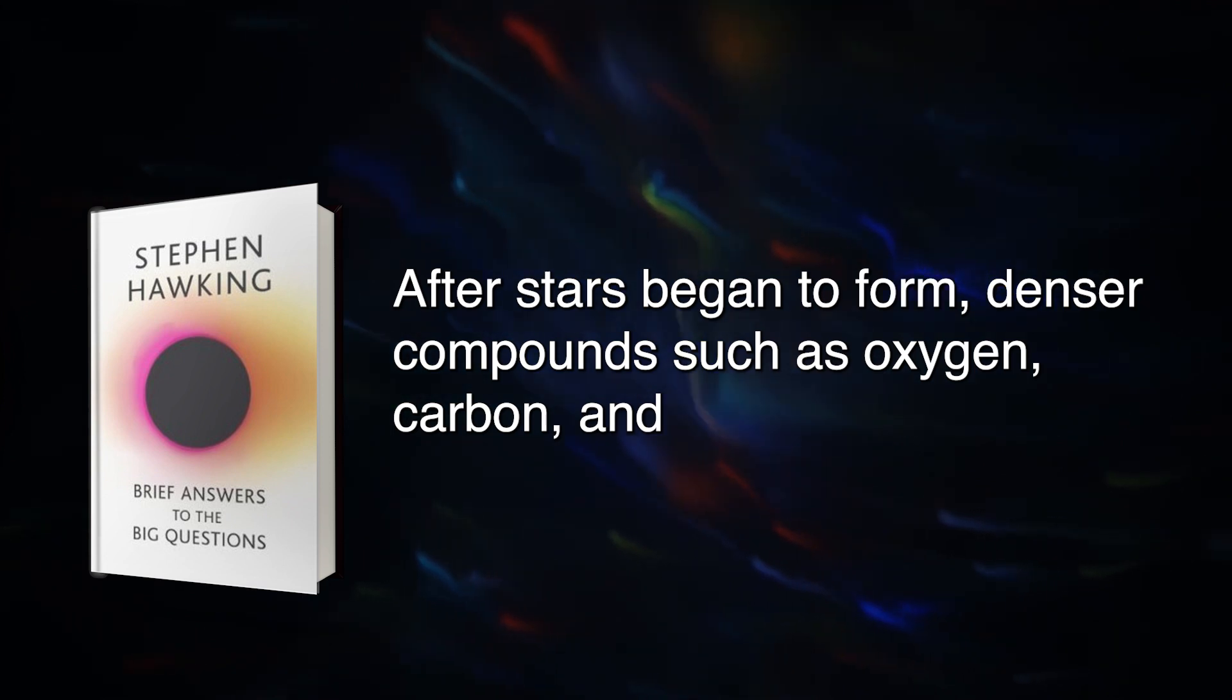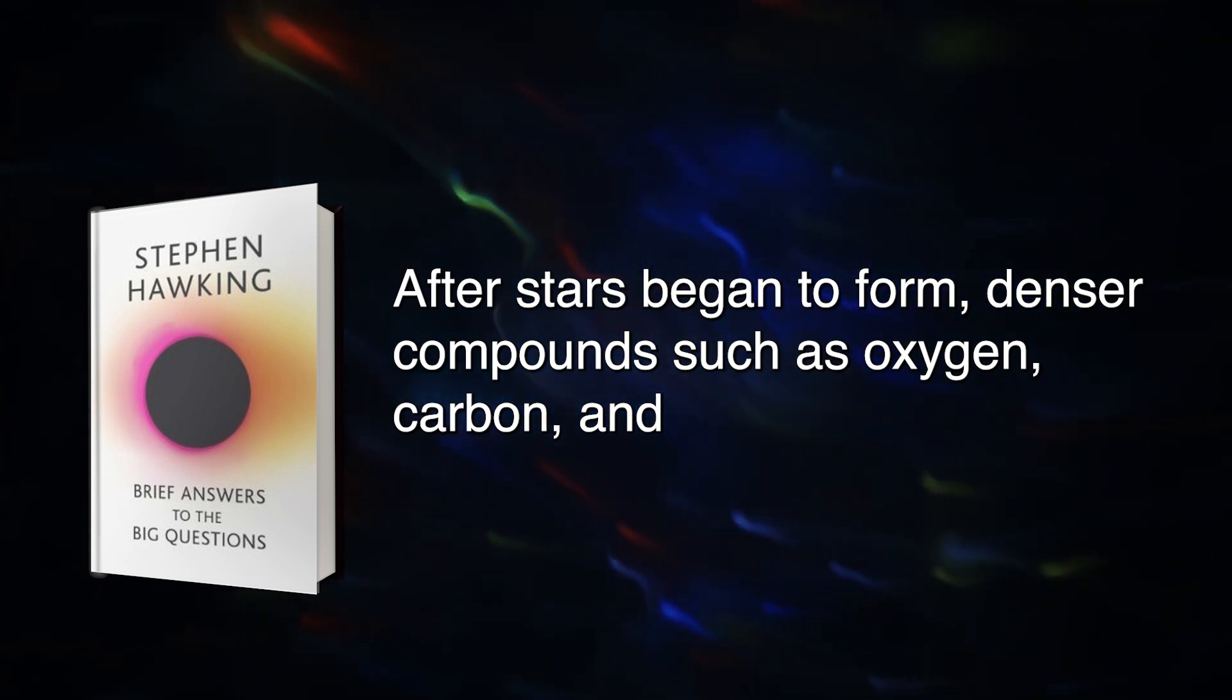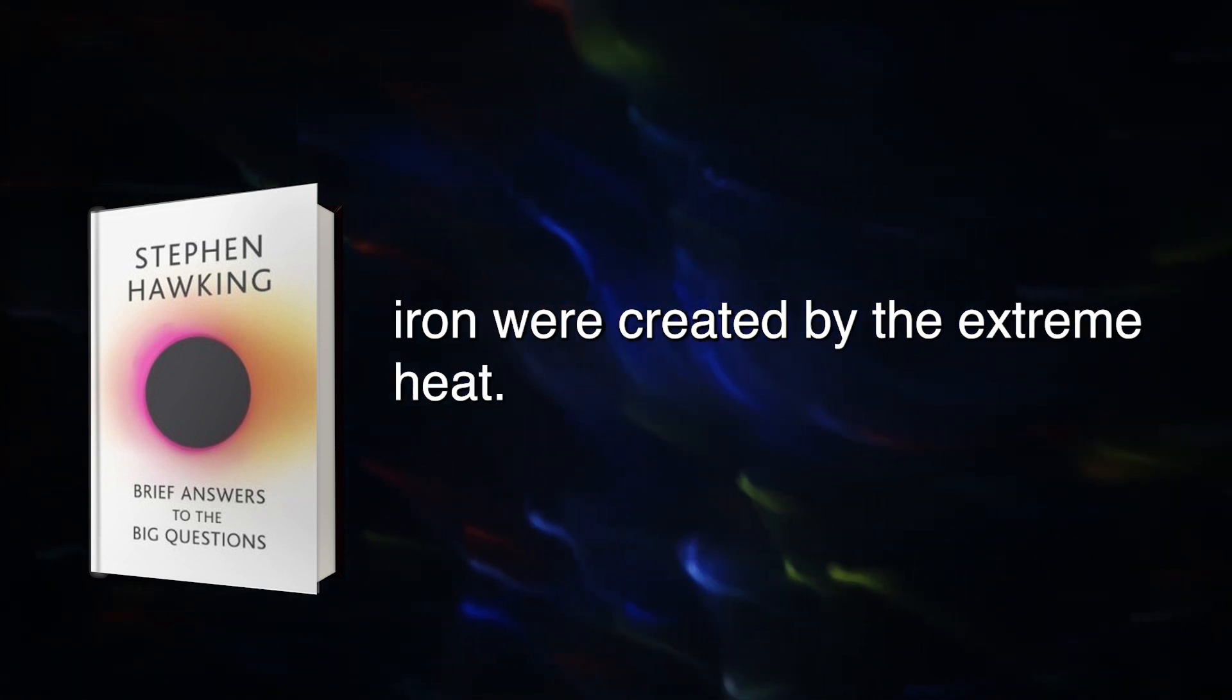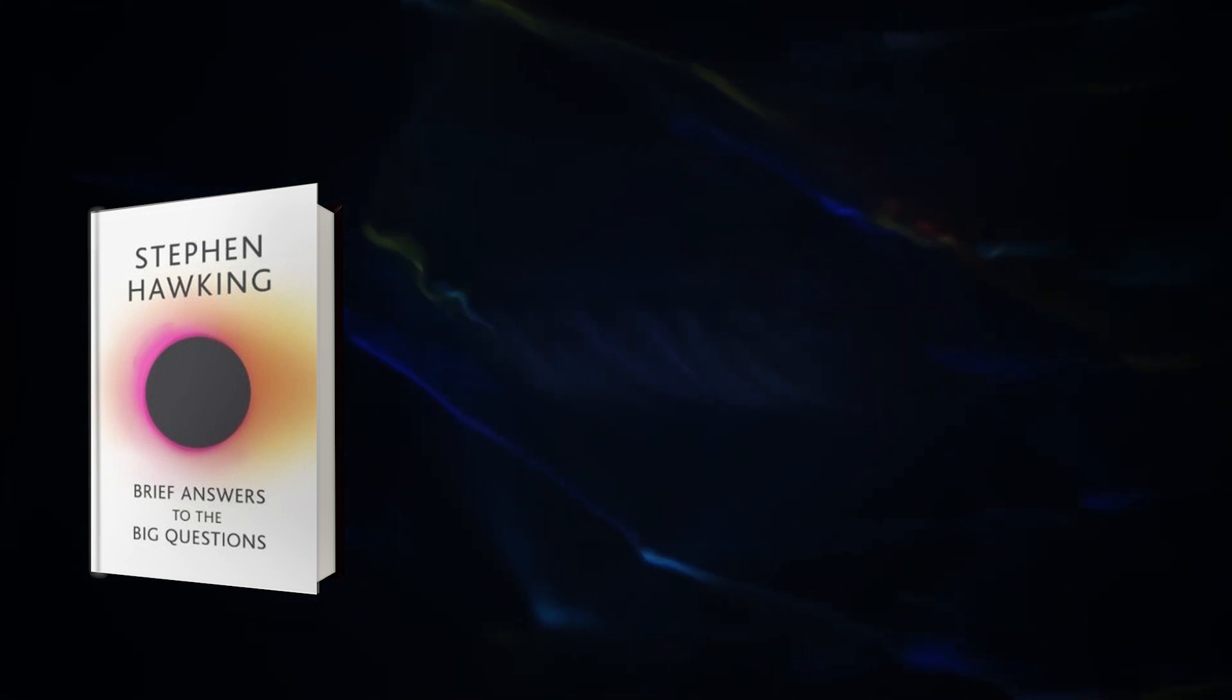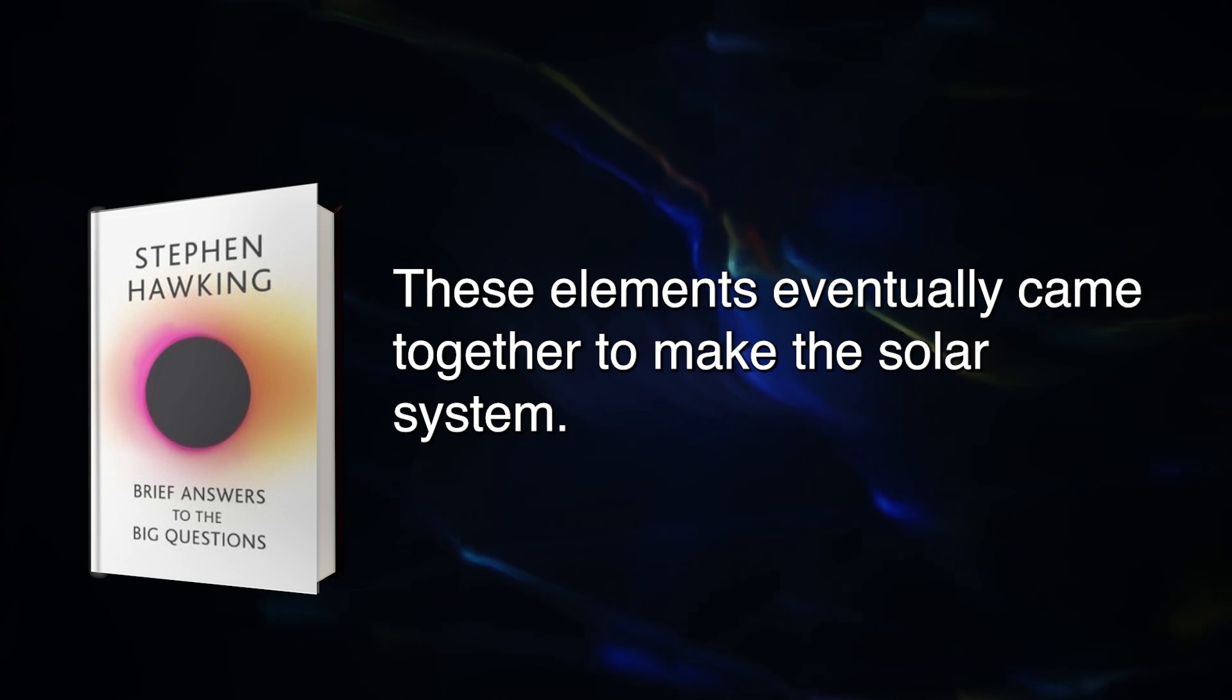These two compounds created much of our young universe. After stars began to form, denser compounds such as oxygen, carbon, and iron were created by the extreme heat. As these stars exploded, they spread their materials through the universe. These elements eventually came together to make the solar system.